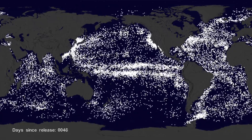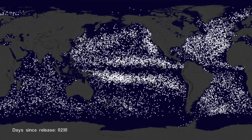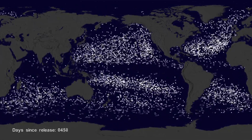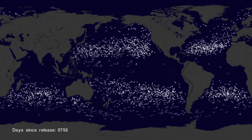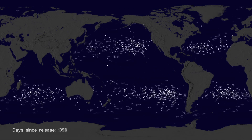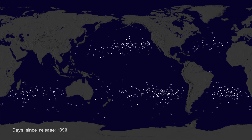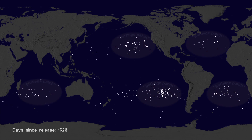If we let all the buoys go at the same time, we can observe buoy migration patterns. The number of buoys decreases because some buoys don't last as long as others. The buoys migrate to five known gyres, also called ocean garbage patches.